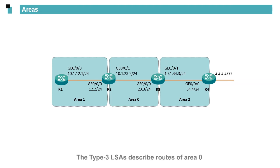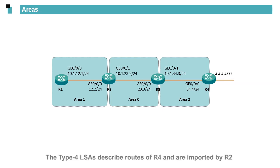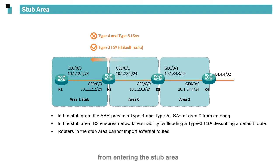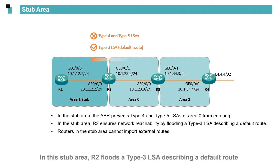The Type 3 LSAs describe routes of Area 0 and Area 2 and are imported by R2. The Type 4 LSAs describe routes of R4 and are imported by R4. To keep R1 from learning external routes, set Area 1 as a stub area. In the stub area, the ABR prevents Type 4 and Type 5 LSAs from entering. The ABR also floods a Type 3 LSA describing a default route to ensure network reachability. Routers in the stub area cannot import external routes.